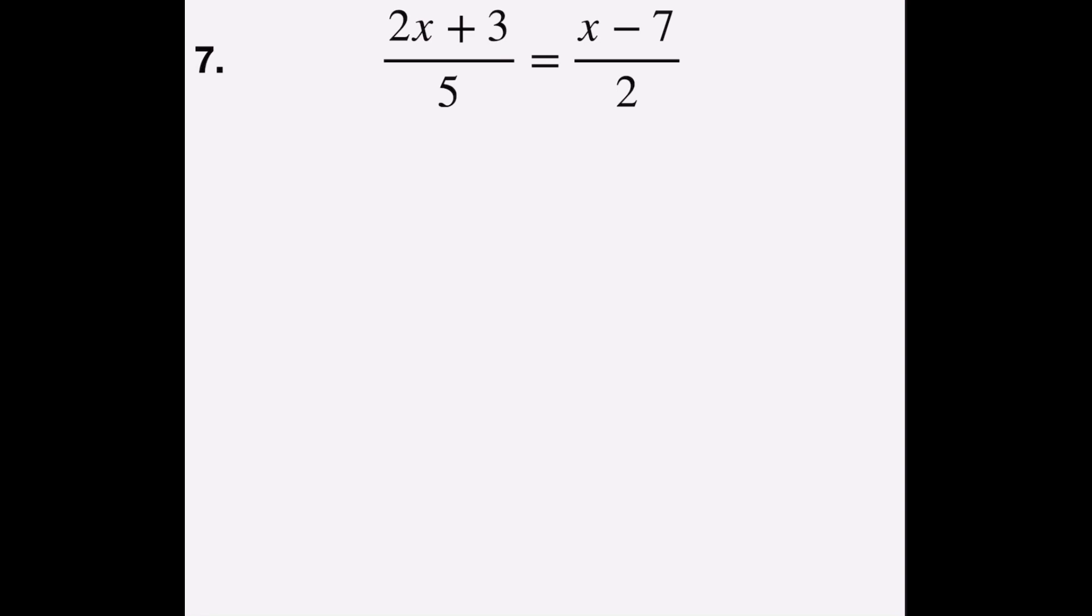Problem number seven says 2x plus 3 over 5 equals x minus 7 over 2. So I'm going to follow the four-step plan.